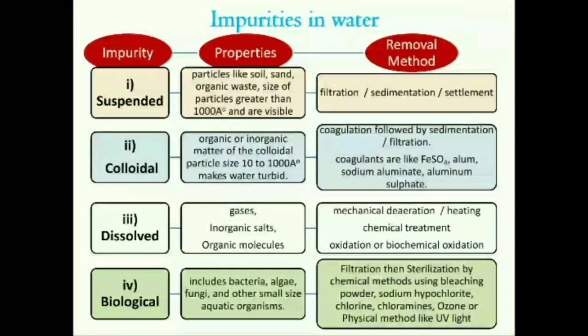Biological impurities can be removed by first filtration and then sterilization. Sterilization can be done by chemical methods using bleaching powder, sodium hypochlorite, chlorine, chloramine, ozone, or by using physical methods like UV light.